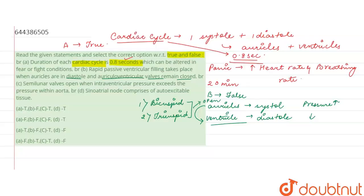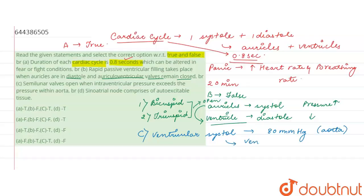The third statement says: semilunar valves open when intraventricular pressure exceeds the pressure within the aorta. That is true. During ventricular systole, the pressure inside the ventricles increases, and when it exceeds 80 mmHg — which is the aortic pressure — the blood moves into the aorta. This is called ventricular ejection. The semilunar valves present between the ventricle and the aorta open at this point. So statement C is also true.